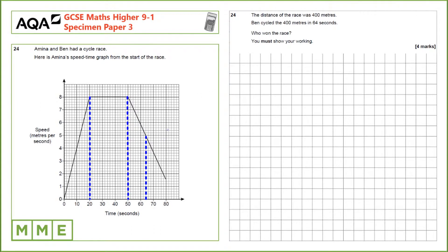We've got the speed time graph here and to calculate the distance that's been travelled we need to find the area under the graph, which is why I've divided it up into three shapes.